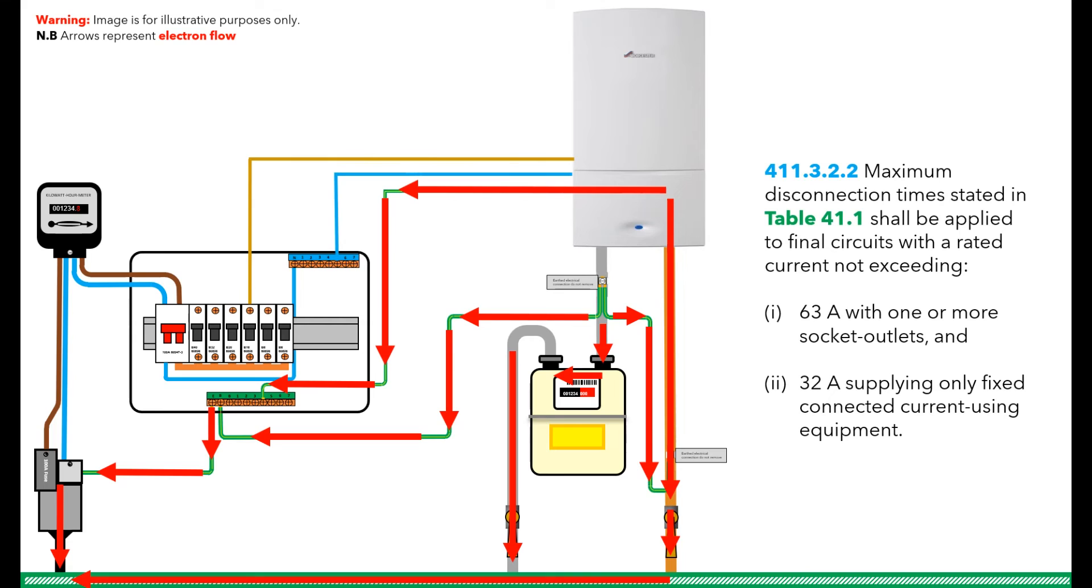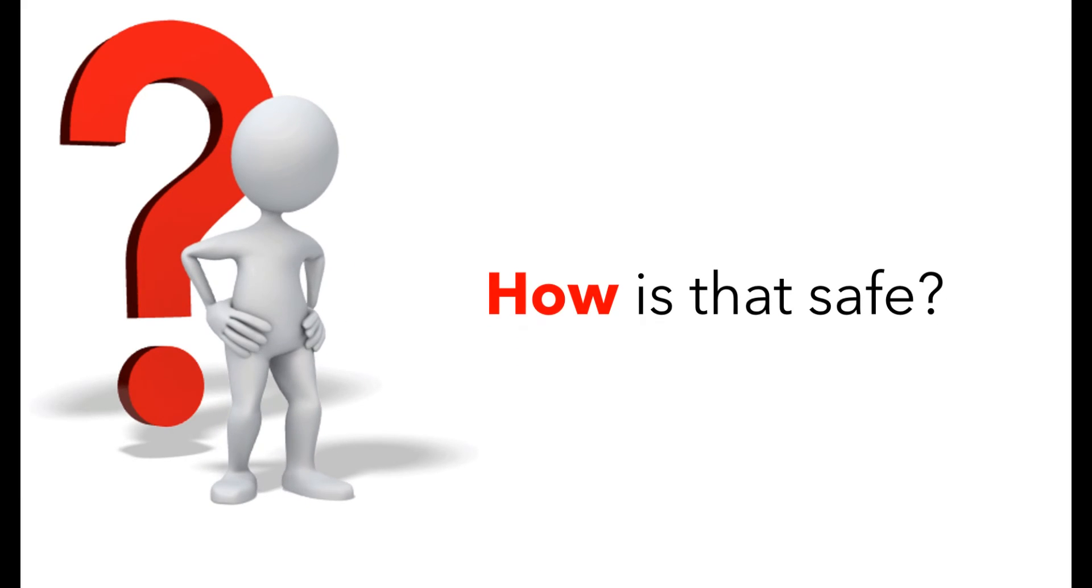Regulation 411.3.2.2 gives guidance on the maximum disconnection times and refers to table 41.1 in BS 7671. Think about that for a second. We are going to intentionally allow all the metal work to become live. So how is that even safe?